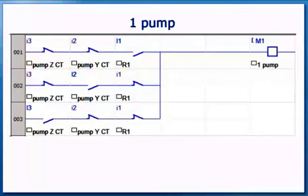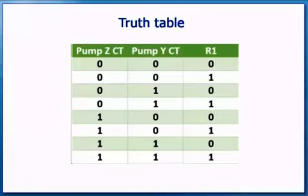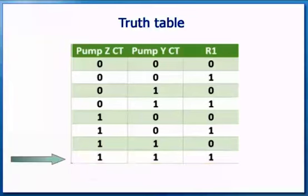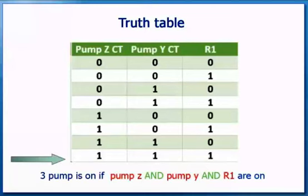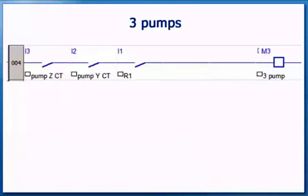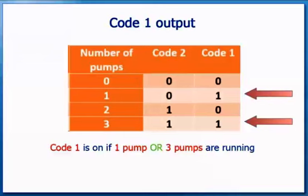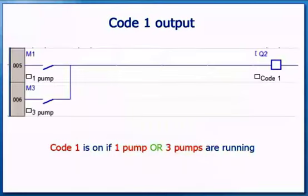The next step is to create the three pump internal relay — an internal relay that indicates when all three pumps are running. Identify which line of the truth table is true for all three pumps running: there is only one, the bottom line. So the three pump relay is on if pump Z is on AND pump Y is on AND R1 is on. The program for three pumps consists of a single AND function of PUMPXCT, PUMPYCT, and R1. Code 1 comes on if there is one pump or three pumps running — we combine the one pump and three pump relays with OR to operate the Code 1 output.